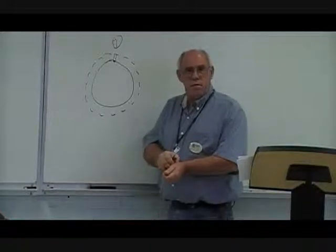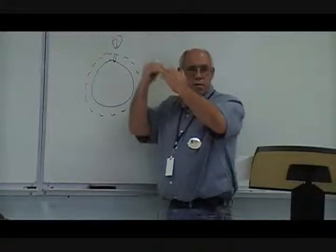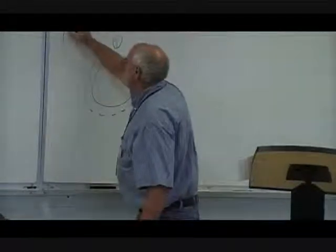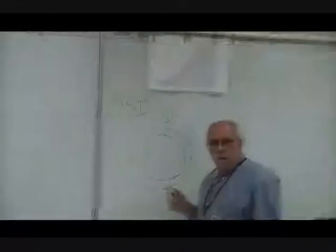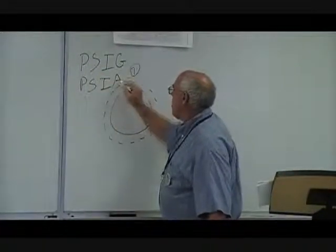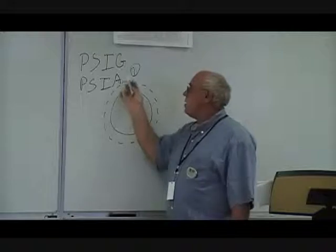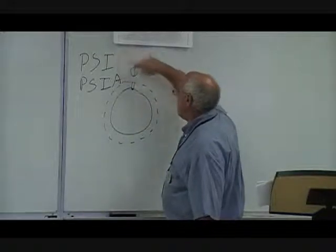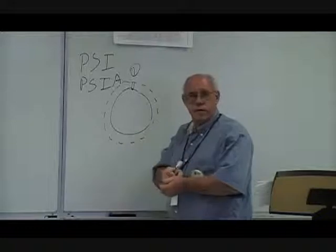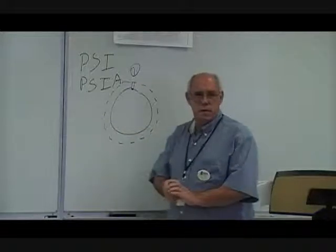If you're up on a mountain it's not going to have as much pressure, because you don't have as much air above it. When you see PSI, we have PSI G and PSI A. Absolute — PSIA — is when you take in that atmospheric pressure also. Gauge — PSIG — is when you have calibrated your instrument for zero when it already has actual pressure on it. Most of our measurements are going to be taken in PSI G, but we drop the G and just call it PSI, pounds per square inch.